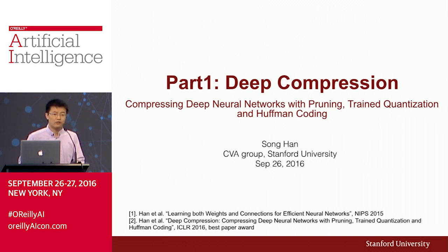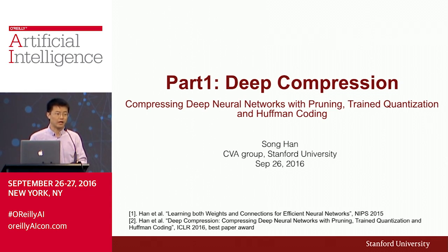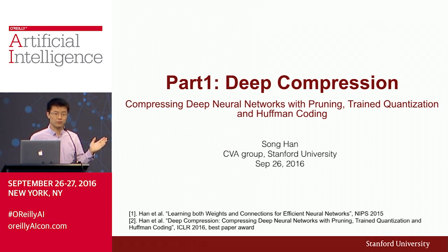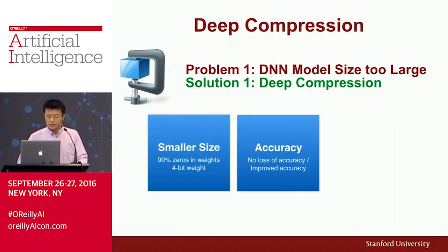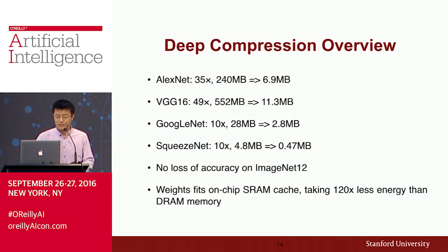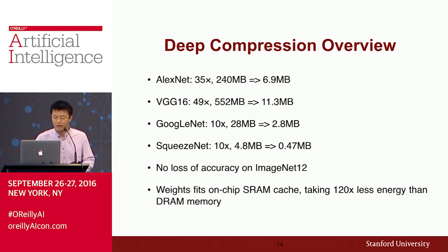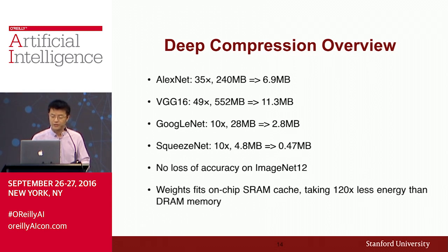That motivates part one of my presentation: deep compression. We can compress state-of-the-art neural networks to make them smaller with the same accuracy. This includes convolutional neural networks for computer vision and LSTMs for natural language processing and speech recognition. Here are some results: I can compress AlexNet by 35 times from 240 megabytes to 6.9 megabytes, and VGG16 by 49 times from over 500 megabytes to only 11 megabytes. Even fully convolutional networks like GoogleNet and SqueezeNet, which are already compact, can be compressed by an order of magnitude — all with no loss of accuracy on ImageNet.